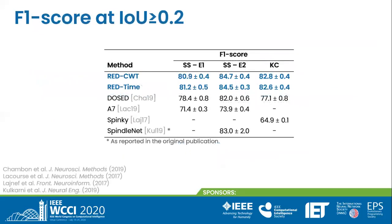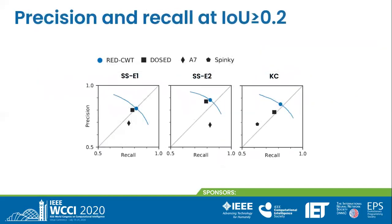Our models significantly outperform baselines according to the F1 score. In the 3 detection tests, RED time and RED CWT have similar performance, with differences that are not statistically significant. Now, we focus on RED CWT for simplicity. Our model outperforms baselines in both precision and recall. Moreover, the operating point is close to the diagonal, which means a balanced trade-off between false positives and false negatives.